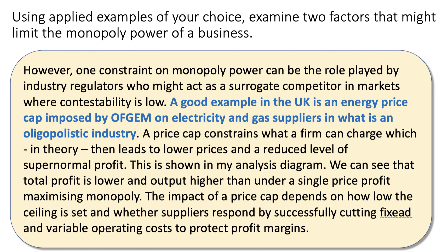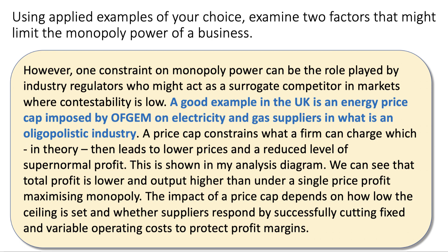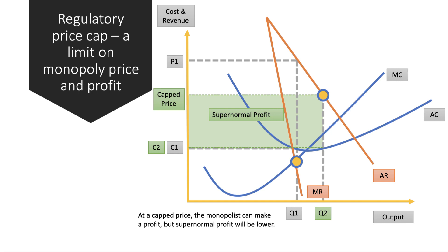We can see from the analysis diagram that total profit is lower and output higher than under a single-price profit-maximizing monopoly. The impact of a price cap depends on how low the ceiling is set and whether suppliers respond by successfully cutting their fixed and variable costs to protect profit margins. In the diagram, the normal profit-maximizing price is P1, but the regulator — Ofgem — caps the price at a lower level shown by the green price line. You can still make a profit, but it is lower than it would have been without the price cap.